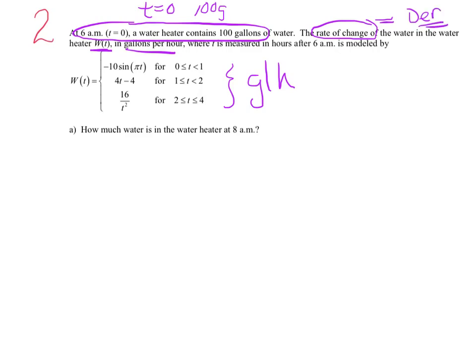Let's slow down. We have this initial condition: at t equals 0, we have 100 gallons. They tell us that W of t is the rate of change in gallons per hour. I want to note all of these units are in gallons per hour. This is the rate of change, implying it is the derivative. When they say how much water is in the heater at 8 a.m., if it's hours after 6 a.m., that's t equals 2 hours after 6 a.m.